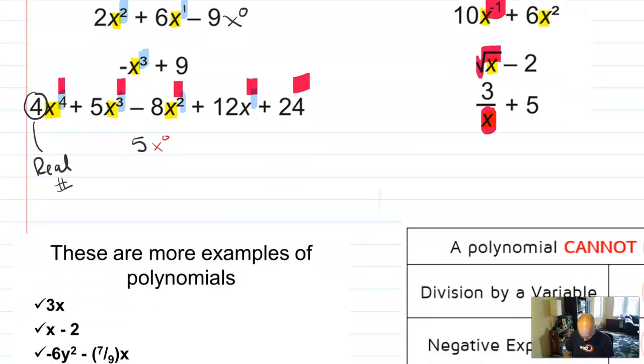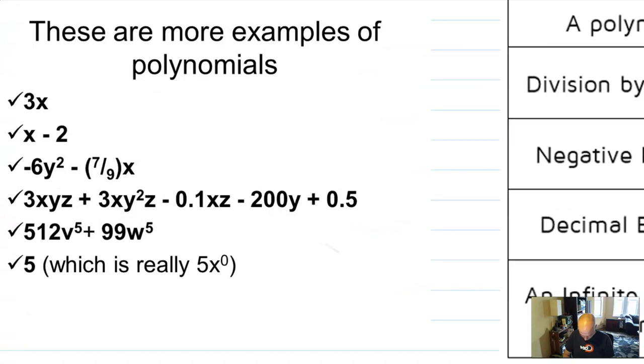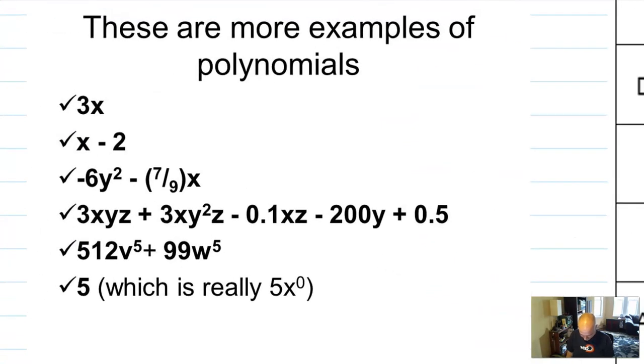So I think I have some examples here. Here's some more examples of polynomials. And you notice that the coefficients could be a fraction. That's allowed. You don't have to have just x's. You can have multiple variables. Those are all allowed. They're all okay.